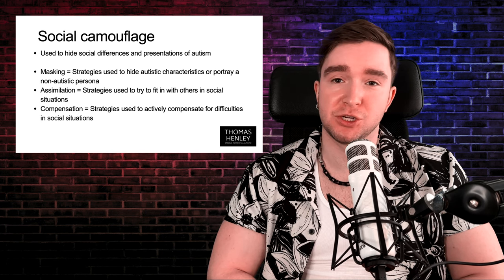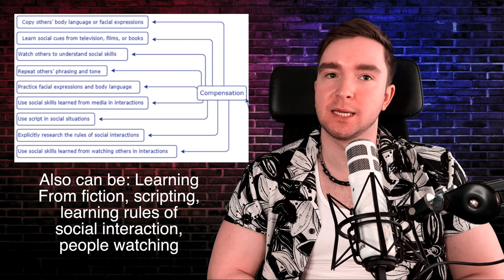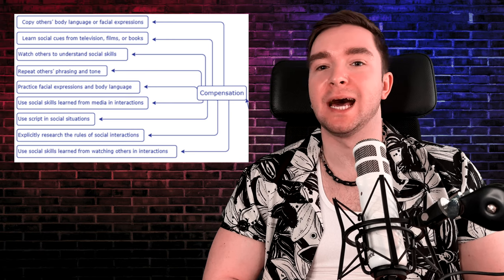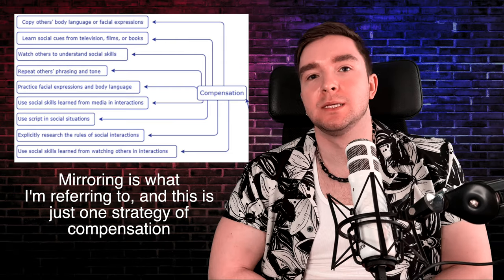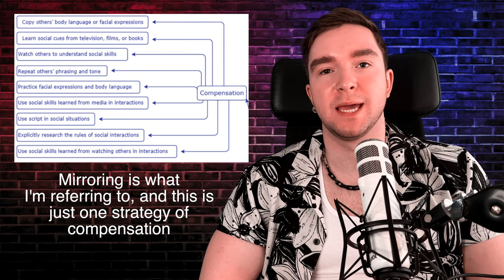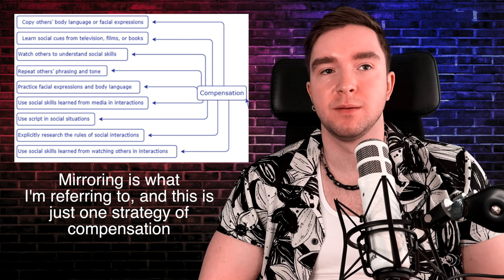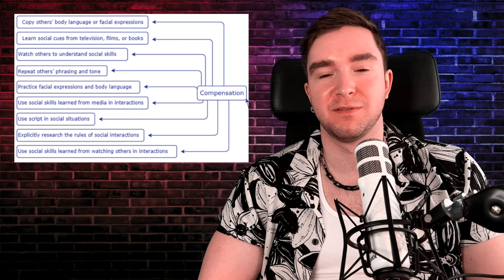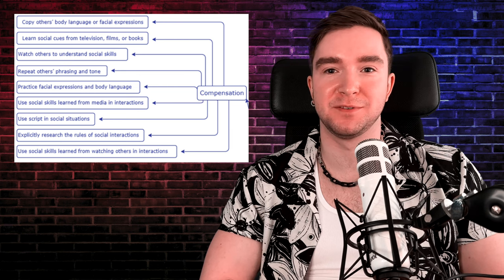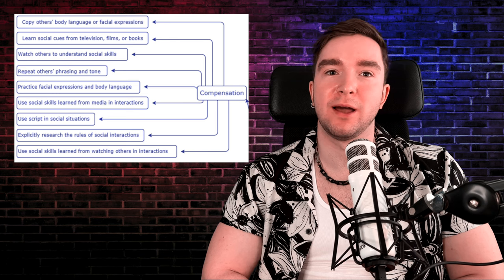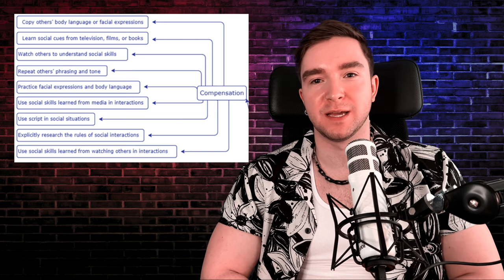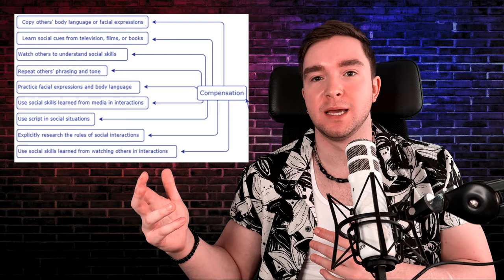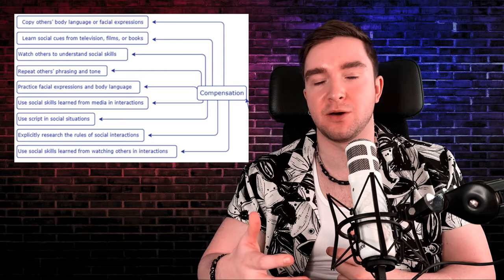The third aspect of social camouflage is compensation. It's similar to masking, but it's the idea of mirroring body language, vocal tonality, and facial expressions in order to build rapport. This can be done consciously or unconsciously. When you're speaking to somebody, you may mirror how they're speaking to you, mirror the energy they're putting out, the things they're talking about, the reactions they have — and this can come across as being two-faced, because you may be unconsciously mirroring very different people.